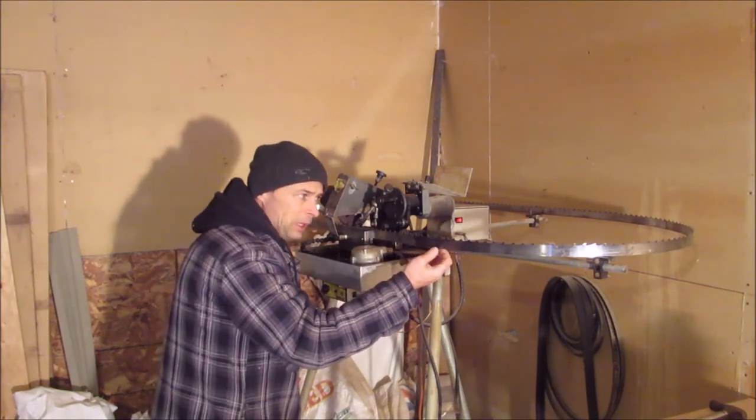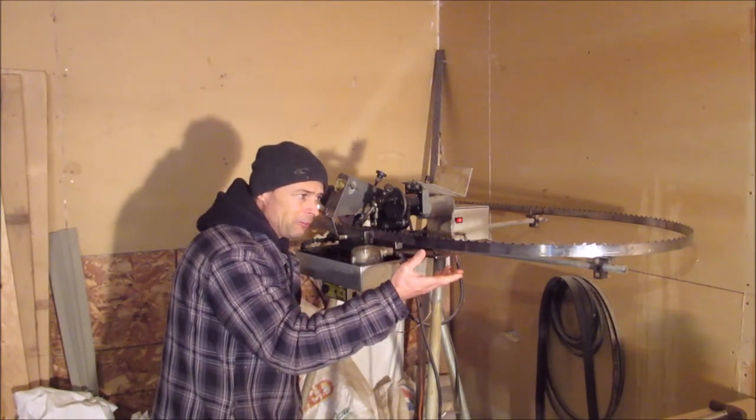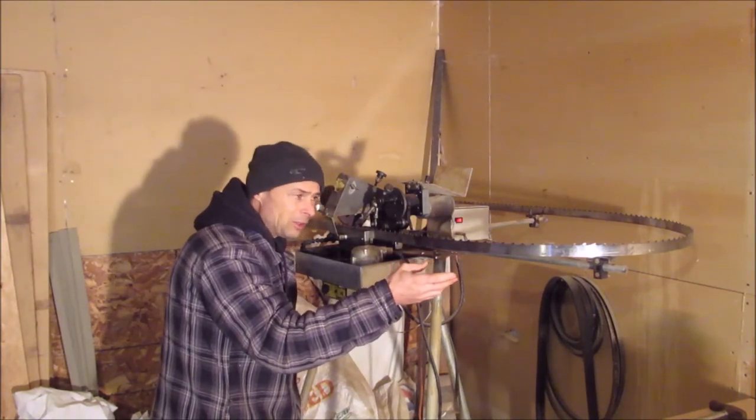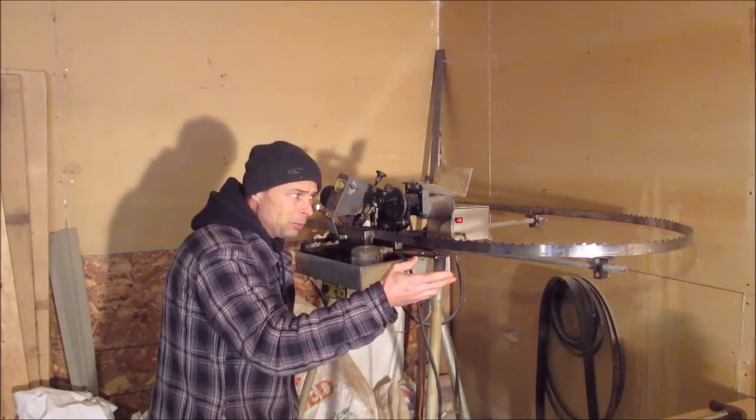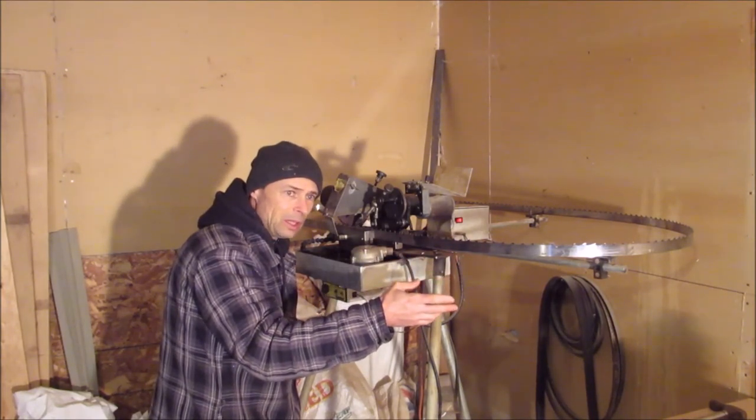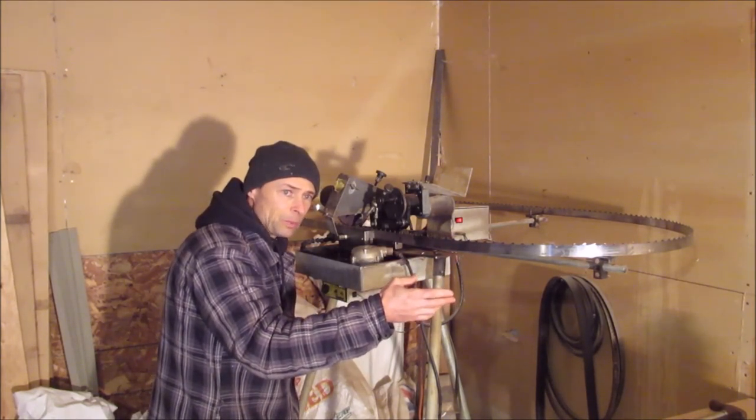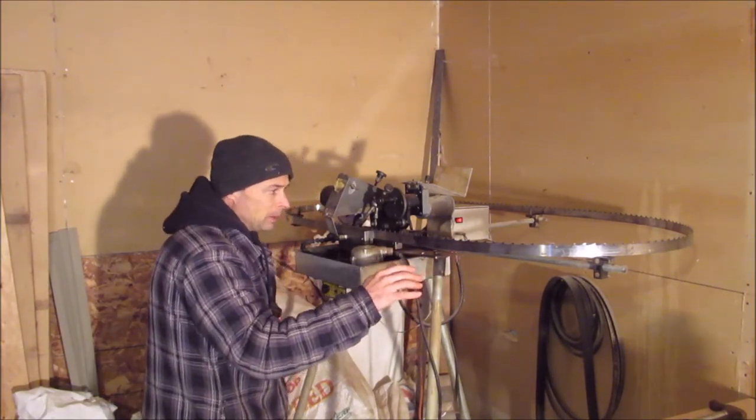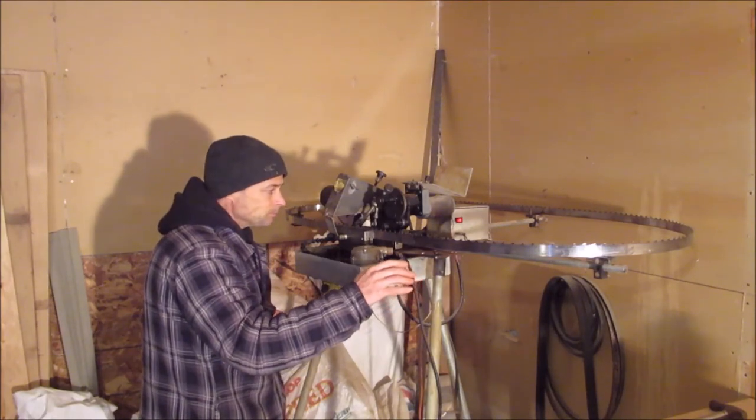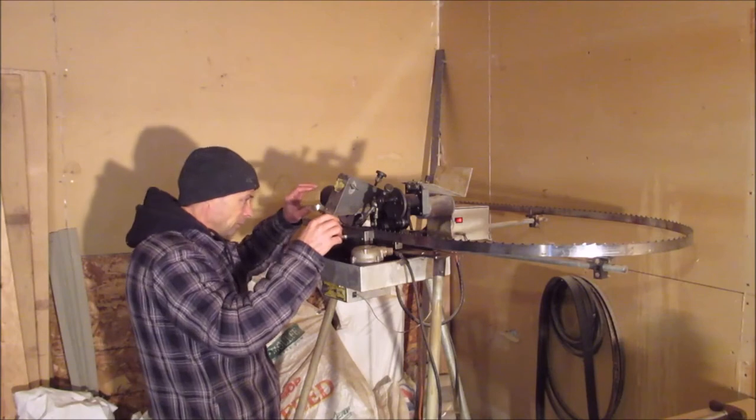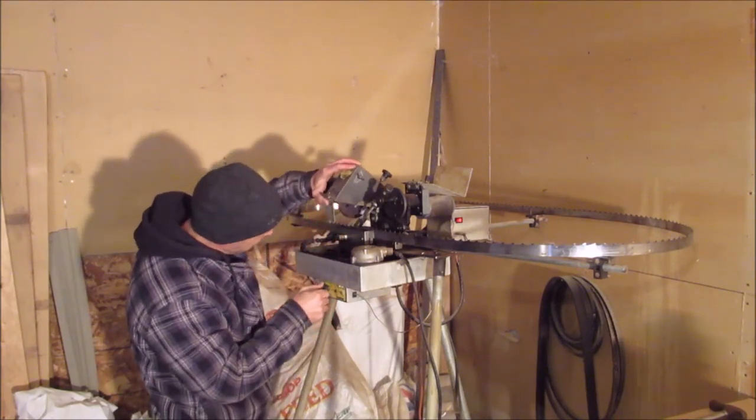Now if this blade had just come from cutting stuff, there would be sap and sawdust stuck to it. You'd want to take that off. Then you can use a brass brush or something like that and just rub it off. And then you go through the sharpening process. Now what I'm doing now is sneaking up on this measurement.